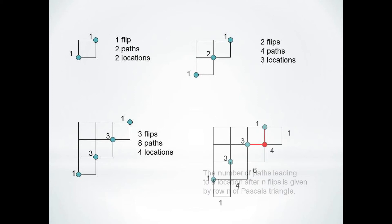It's not hard to see why. If we flip one more coin, you can see that the only way to get to the red spot is by traversing one of the two red lines. Since there is one way to get to the top node and three ways to get to the side node, there's one plus three equals four ways to get to the red node.